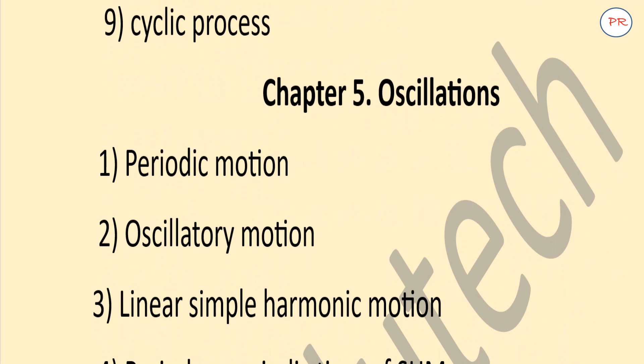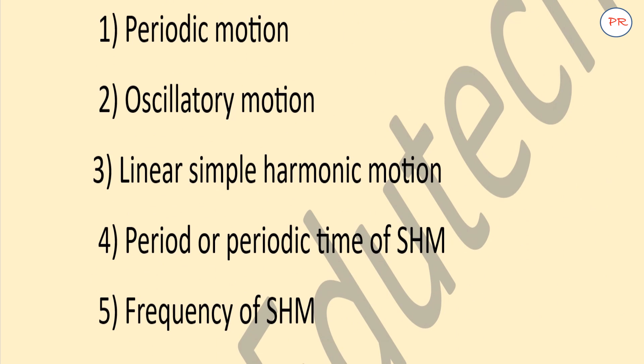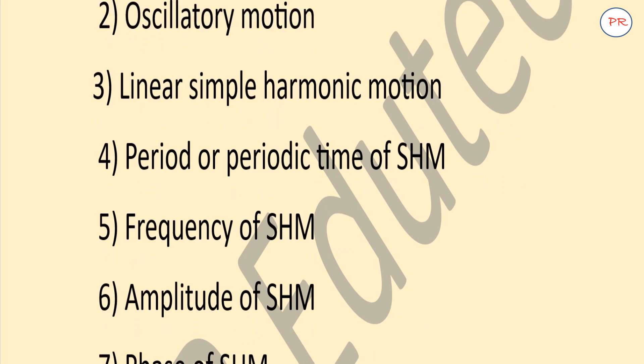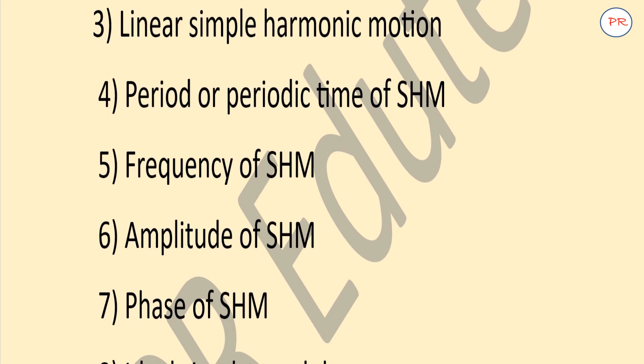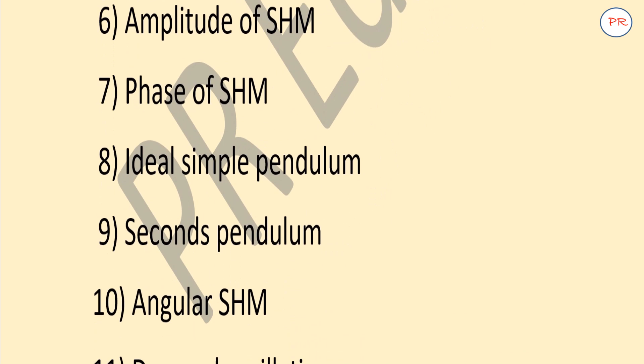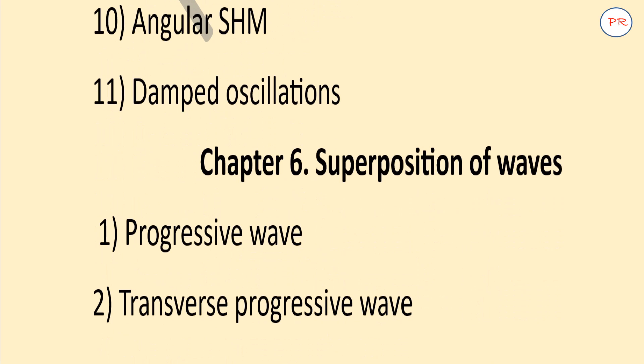Now we will go for Chapter 5: Oscillations. Periodic motion, oscillatory motion, linear simple harmonic motion, period or periodic time of SHM, frequency of SHM, amplitude of SHM, phase of SHM, ideal simple pendulum, seconds pendulum (this is a very important definition), angular SHM, damped oscillation.